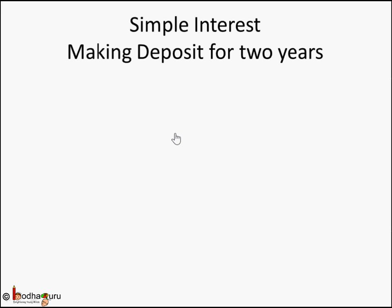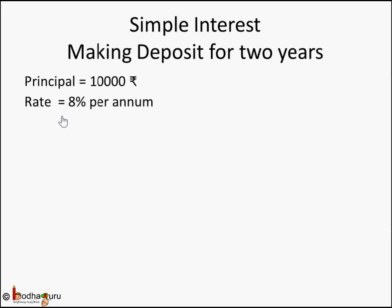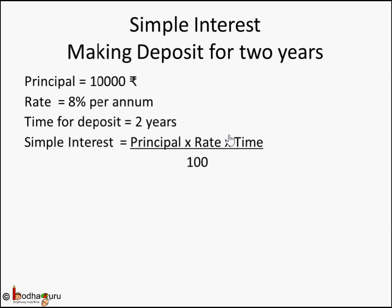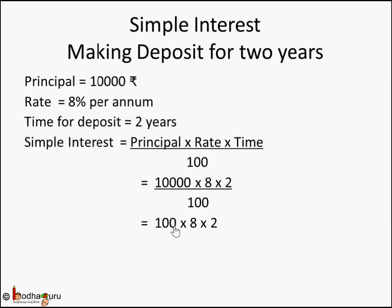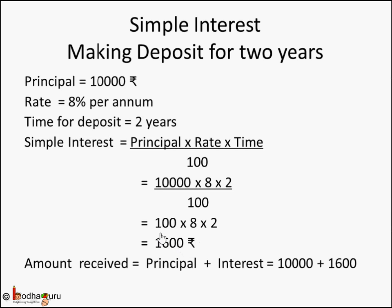If he made the deposit for 2 years, how much would he get? Principal remains 10,000 rupees, rate remains 8% per annum, and time increases to 2 years. Simple interest: 10,000 × 8 × 2 / 100. Cancel the zeros: 100 × 8 × 2 — 100 × 8 is 800, 800 × 2 is 1,600 rupees. After 1 year he was getting 800 rupees; after 2 years he gets 1,600 rupees because the second year also earns interest.